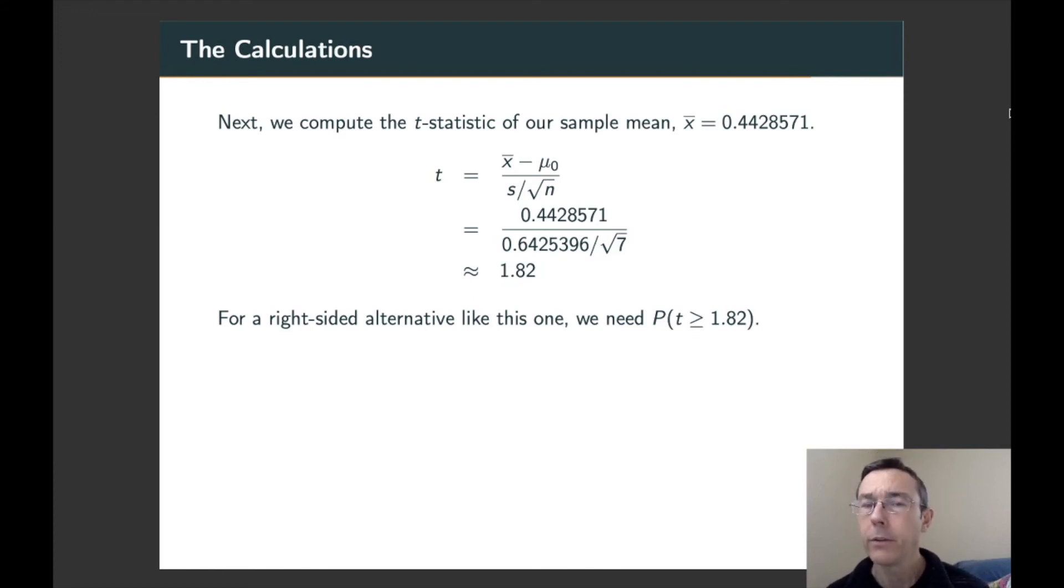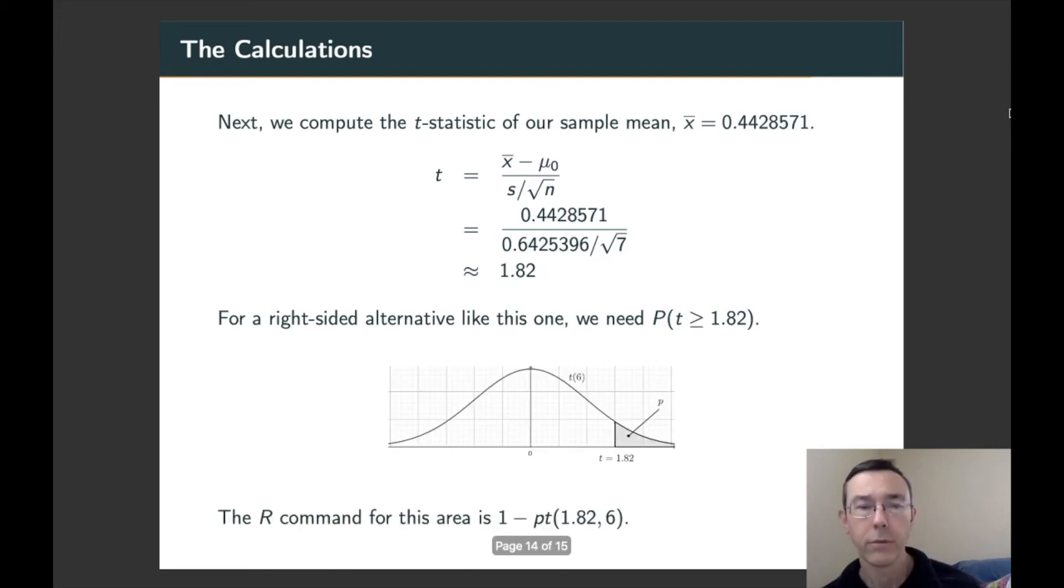Our p-value is going to be the probability of getting a t-value greater than or equal to that just by random chance. So when we're thinking about evaluating that probability statement, we really want to be thinking in terms of a picture. The p-value is going to be that shaded area there, the area to the right of t equals 1.82 in the t distribution with six degrees of freedom, six being one less than our sample size. So to get the area to the right of something, first we get the area to the left and then we subtract from one. So one minus PT of 1.82 comma six.